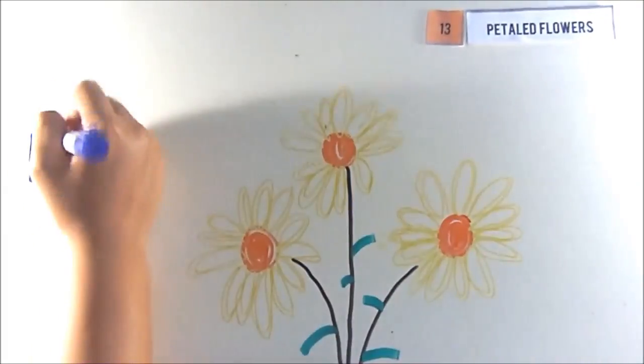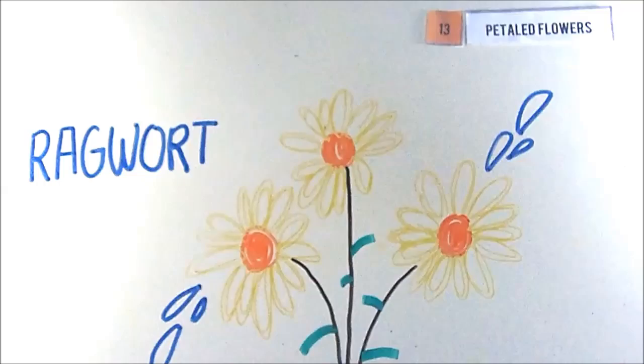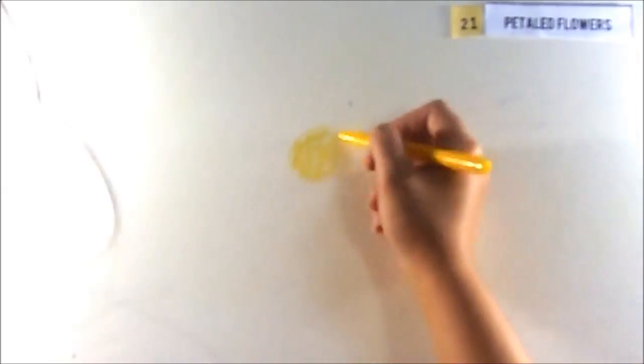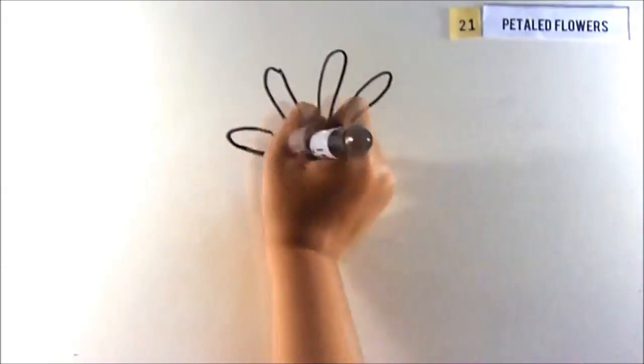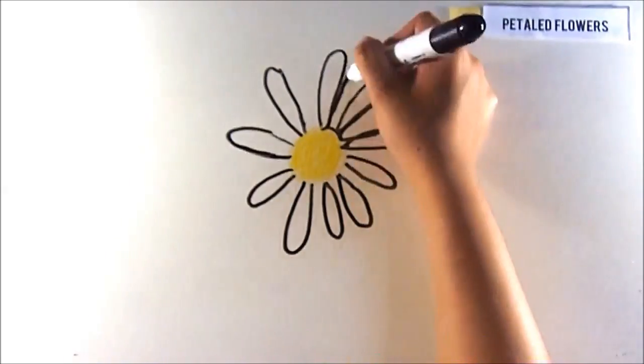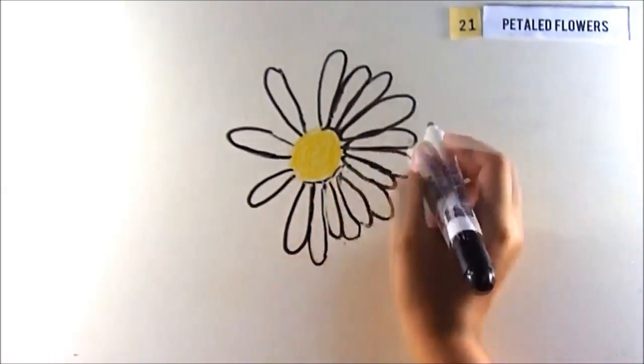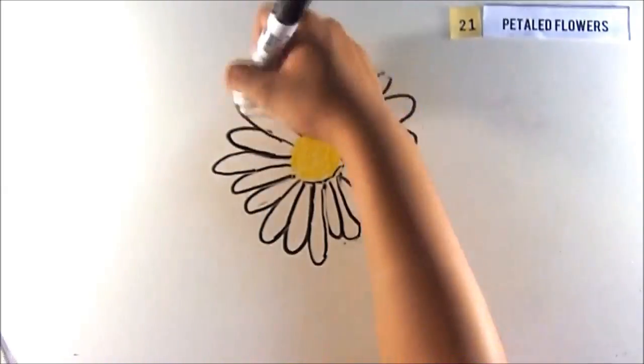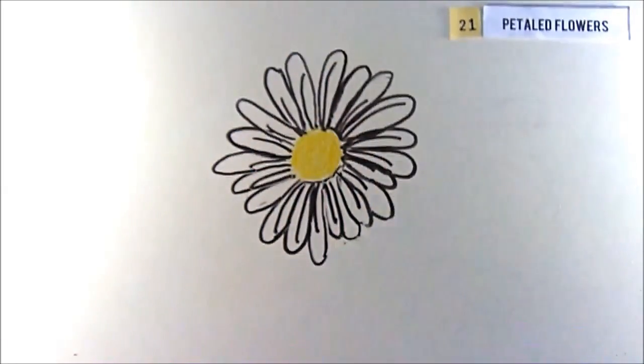The last example, but not the last number in the Fibonacci sequence, is number 21. 21 petals can be seen in daisies, but some daisies also have 13 and 34 petals, which are also in the Fibonacci sequence.